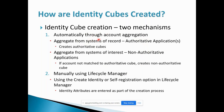If an account from the non-authoritative application doesn't match an existing authoritative cube, it will create a non-authoritative cube. This can be manually correlated with an existing identity or it might be a new identity that needs to be created.